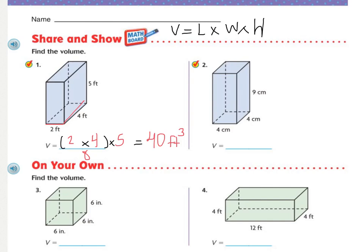Number 2, we have a 4 times 4 times 9. Okay, so 4 times 4, that's 16. 16 times 9 equals, it equals 144. But that's still not correct. I need my labels. They, this time they measured in centimeters. And it's volume. I multiplied 3 dimensions. So it has to have my exponent of 3 for cubed. So 144 centimeters cubed.